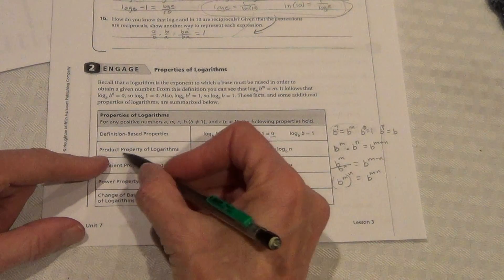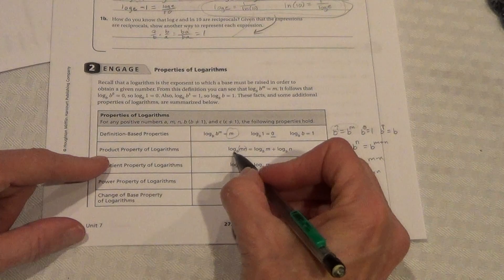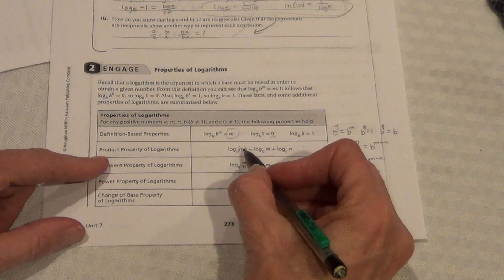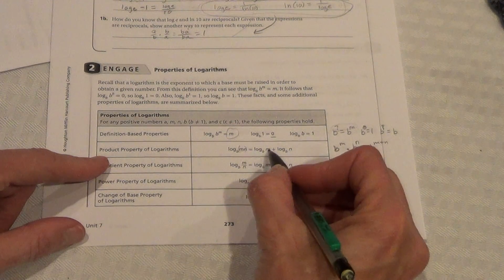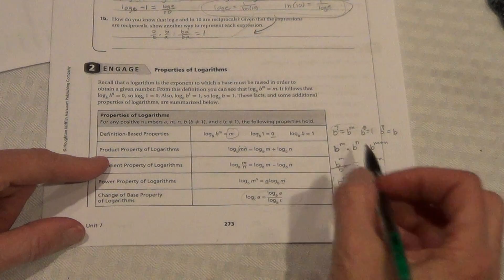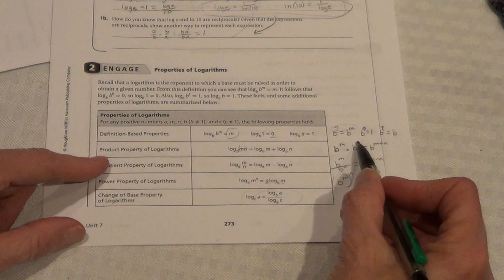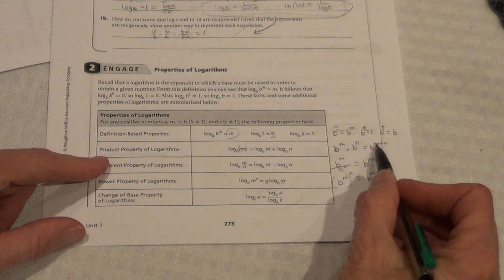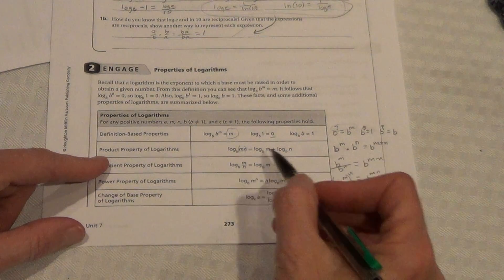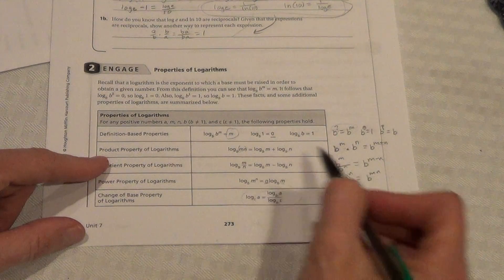Product property of logarithms, we see that log b of mn is equal to log b m plus log b n. Similarly, in exponents, b to the m times b to the n, we would add those exponents. So, this should make sense when you multiply, you add.